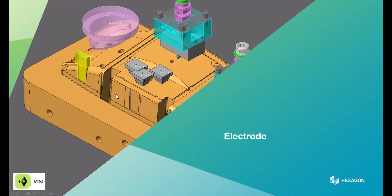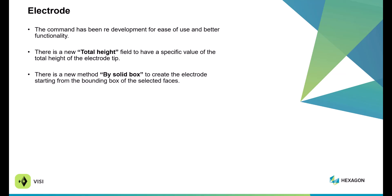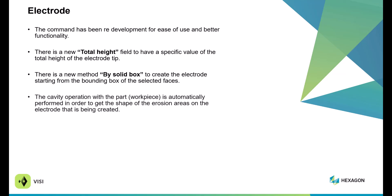Within Solid Interference, I can select all additional areas and go to solid interference to see all contact faces and collision faces in green and red. I can show interference zones only, hide non-intersecting faces, do only intersections, display all, and apply the information. Within the electrode module, the command has been redeveloped for ease of use and better functionality. New options include Total Height, which shows the total height for the electrode tip; a Buy Solid Box option that creates a solid box for the electrode using bounding box on selected faces; and a cavity operation that allows you to cavity the work piece without using the cavity command separately, creating the erosion area shape for the electrode.